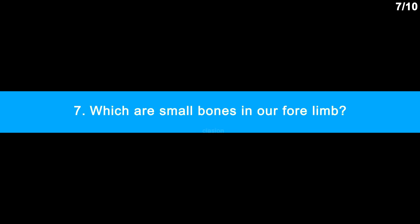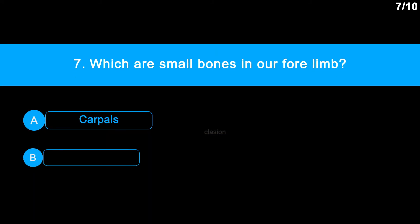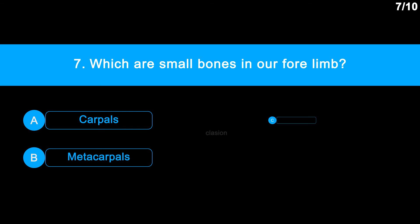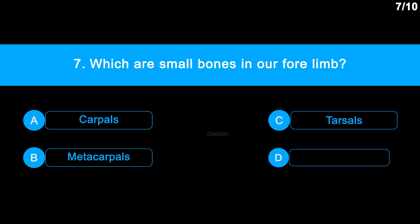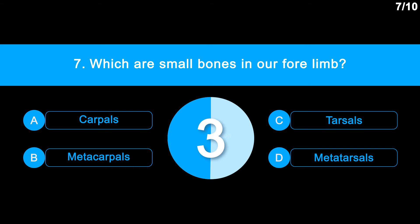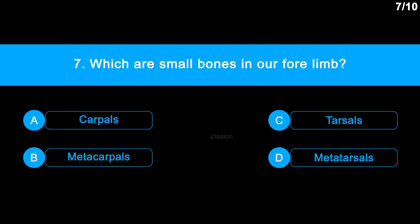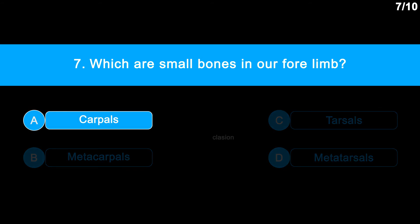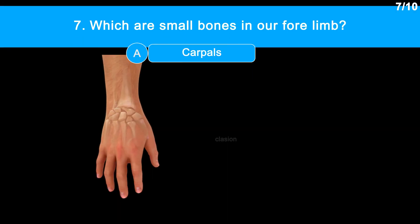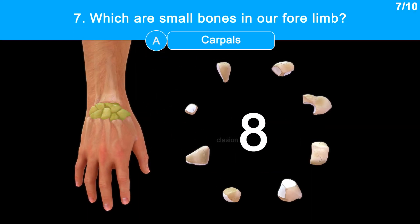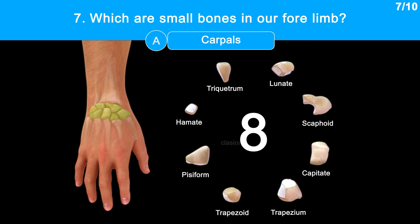Question 7: Which are the small bones in our forelimb? Option A: carpals. Option B: metacarpals. Option C: tarsals. Option D: metatarsals. Correct answer is Option A: carpals. Carpal bones are the 8 small bones that make up the wrist, or carpus, so they are also called wrist bones. The names of all carpals are shown on screen.